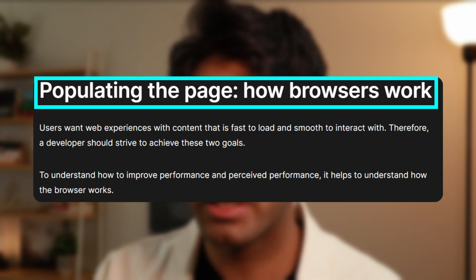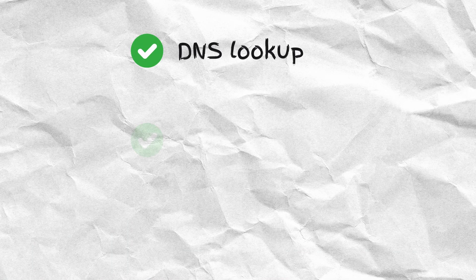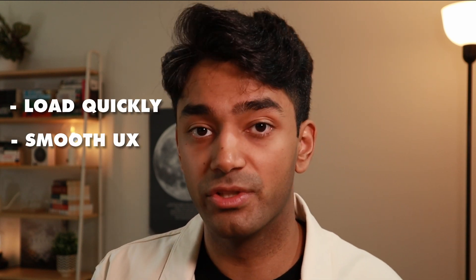So once you've got a really solid understanding of HTML, CSS and JavaScript, the next resource you're going to want to explore is an article published by MDN Web Docs titled 'Populating the Page: How Browsers Work.' This is an excellent resource for understanding all the work that your browser does behind the scenes to render your HTML, CSS and JavaScript into websites that you see across the internet. It also includes explanations on processes and protocols like DNS lookups and TCP handshakes, which also happen behind the scenes. Understanding these concepts is really important if you want to create websites that load quickly and provide a smooth user experience.